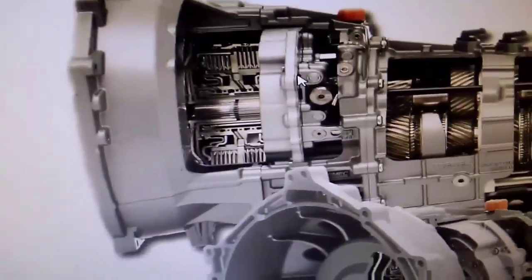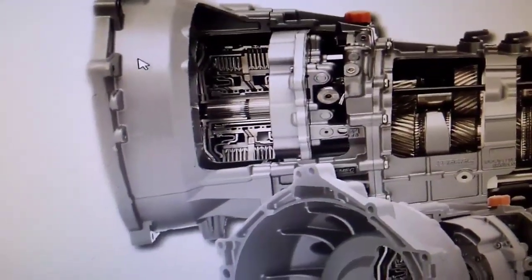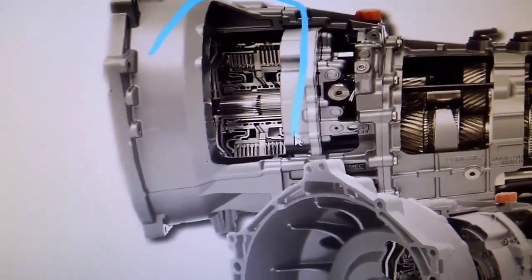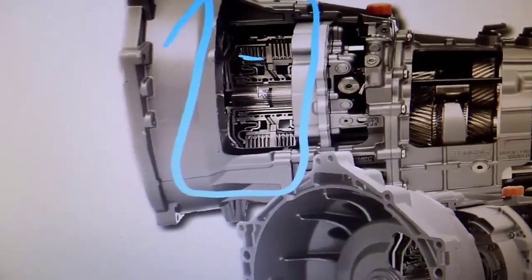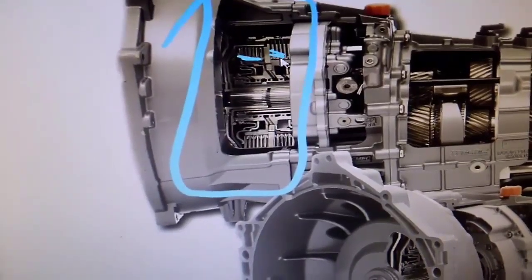Now, if you look right up over here, alright, these are the dual clutches. Right there. You have one clutch, which is right here. Then you have a second clutch, which is right here.